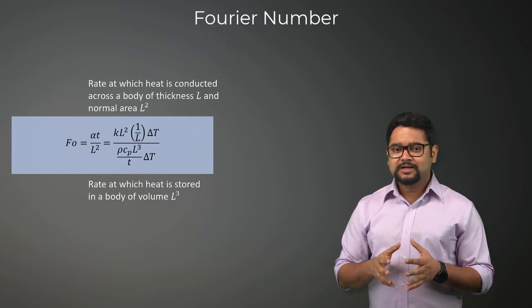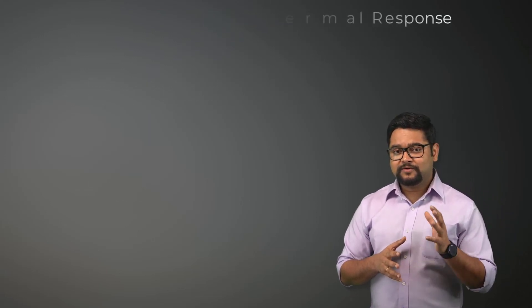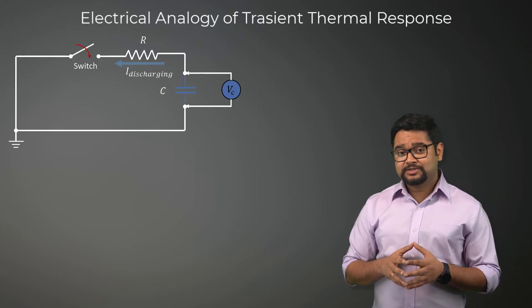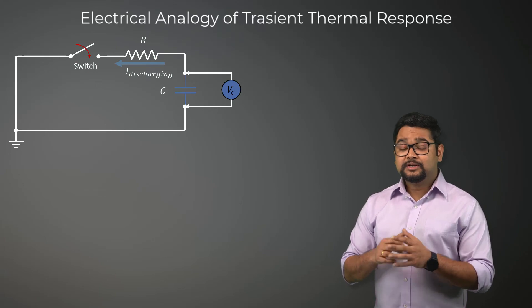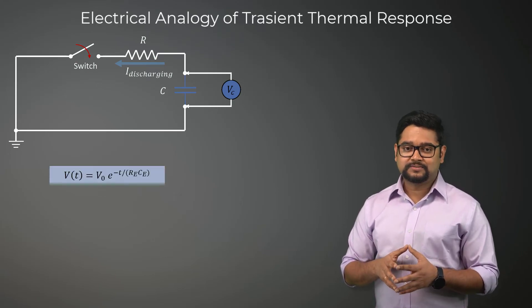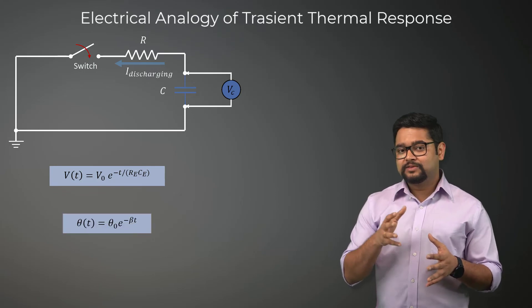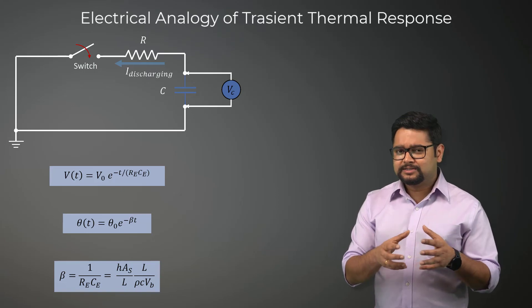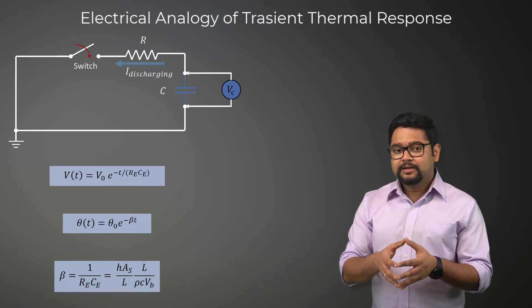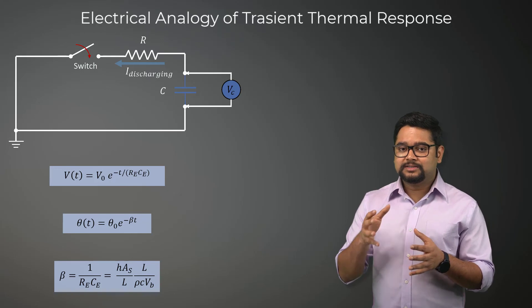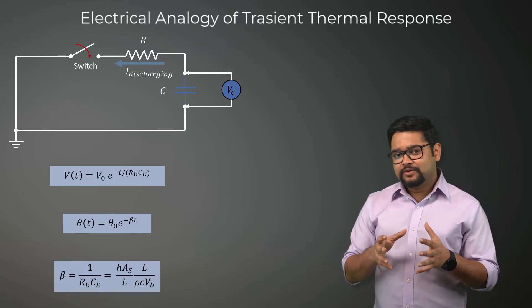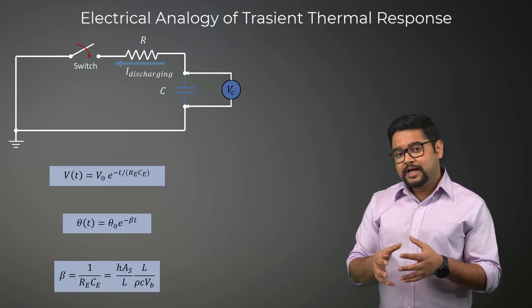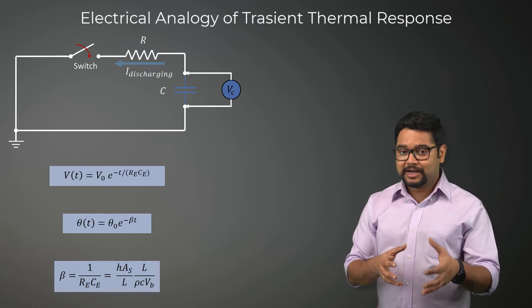Before we wrap up this lesson, let's look at the electrical analogy of transient thermal response. For an electrical circuit with capacitor and a resistor, the transient voltage is given by this expression. Now, if we compare this with the lumped thermal solution, we see that if we introduce a characteristic length scale L, then beta can be interpreted as this expression. Therefore, we see that Re is the equivalent thermal resistance and Ce is the equivalent thermal capacitance.